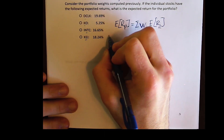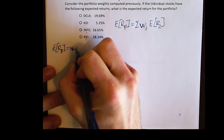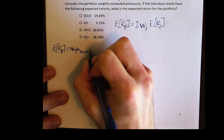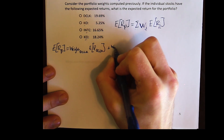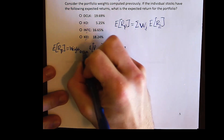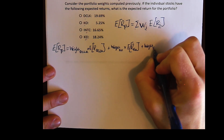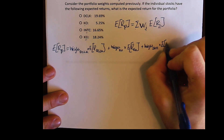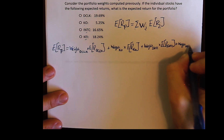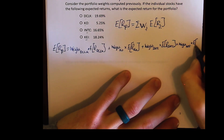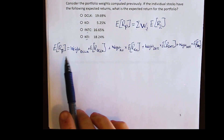Expanding the formula, the expected return of the portfolio equals the weight invested in DoubleClick times DoubleClick's expected return, plus the weight in Coca-Cola times Coca-Cola's expected return, plus the weight in Intel times Intel's expected return, plus the weight in Keithley Industries times Keithley's expected return. A little tedious, but nothing complicated.